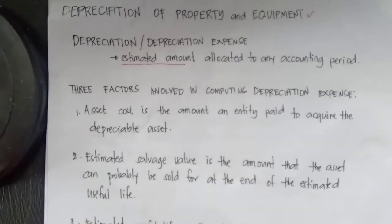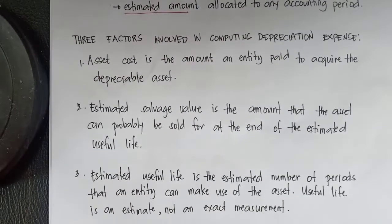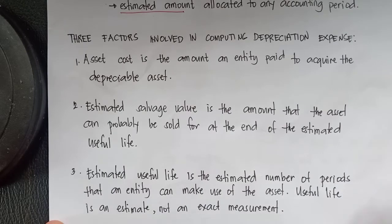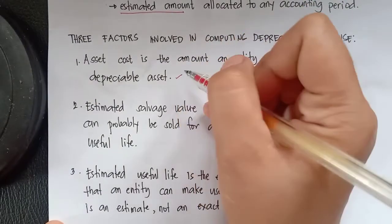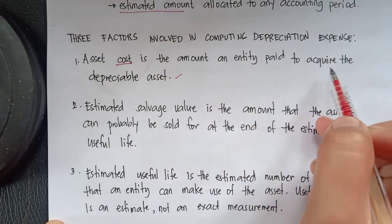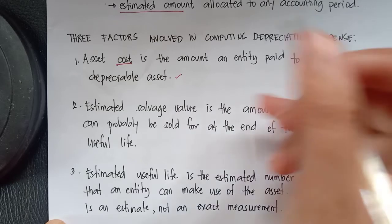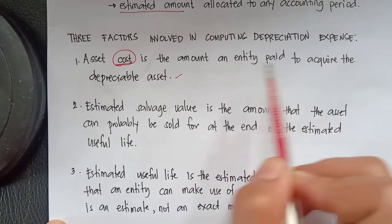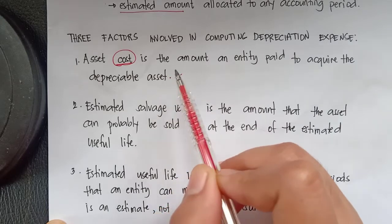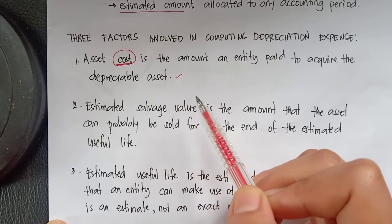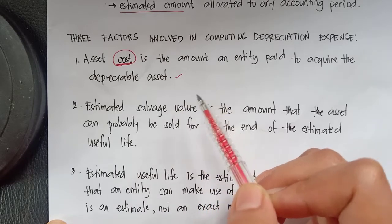So we have three factors involved in computing the depreciation expense. What are those three factors? First is asset cost — it is the amount an entity paid to acquire the depreciable asset. So the first factor is the cost, which is the amount an entity paid to acquire the depreciable asset.